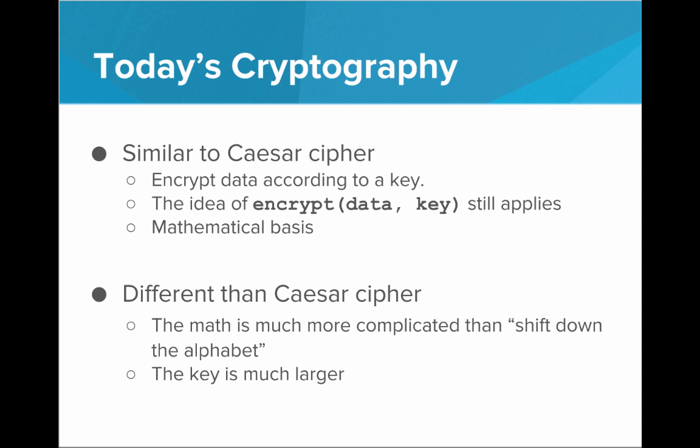But that's ancient cryptography. What about today's cryptography? Well, it's actually very similar to the Caesar cipher — we're still encrypting data according to a key. The idea of passing it to an encrypt function that produces an encrypted message as a product of the data and the key still applies. It's just that what's going on inside that encrypt function has a much more complicated mathematical basis. The math behind the scenes is much more complicated than simply shifting down the alphabet. Also, the key is much larger. Rather than using a key between 1 and 26, we're using massive keys that can take on trillions of trillions of trillions of values.